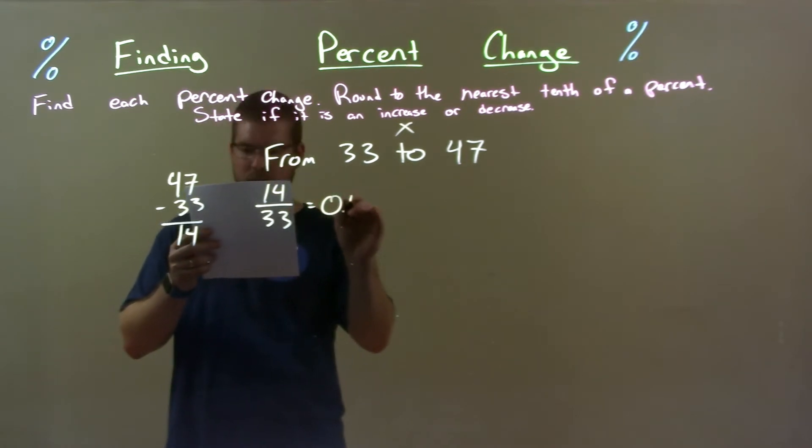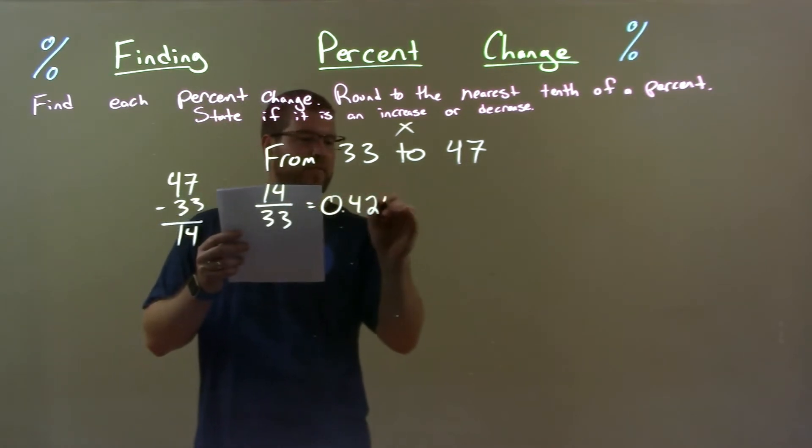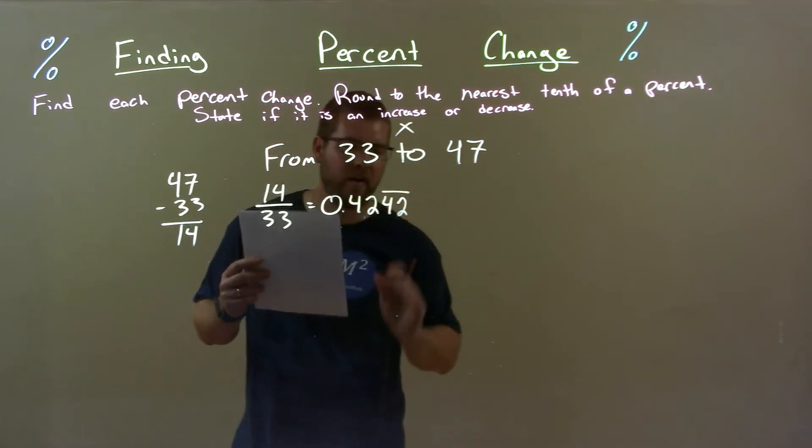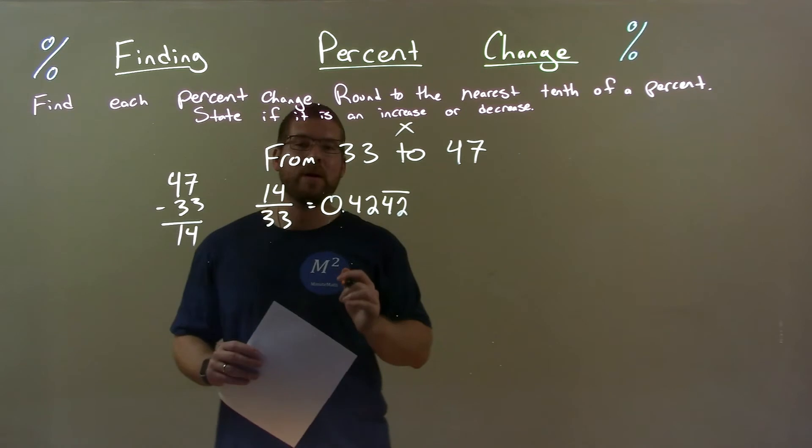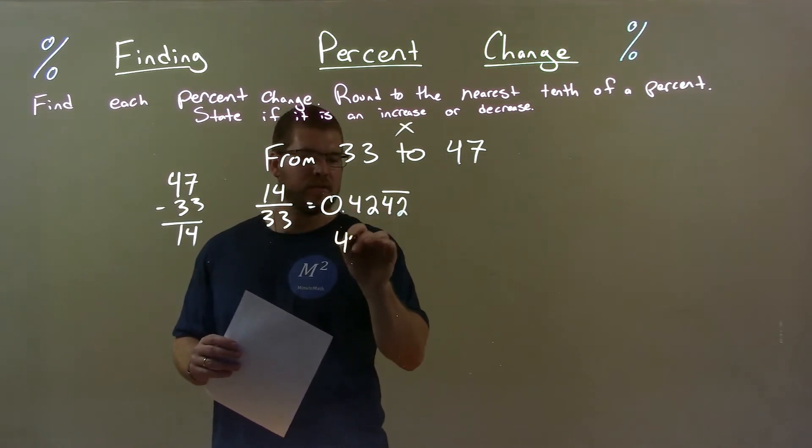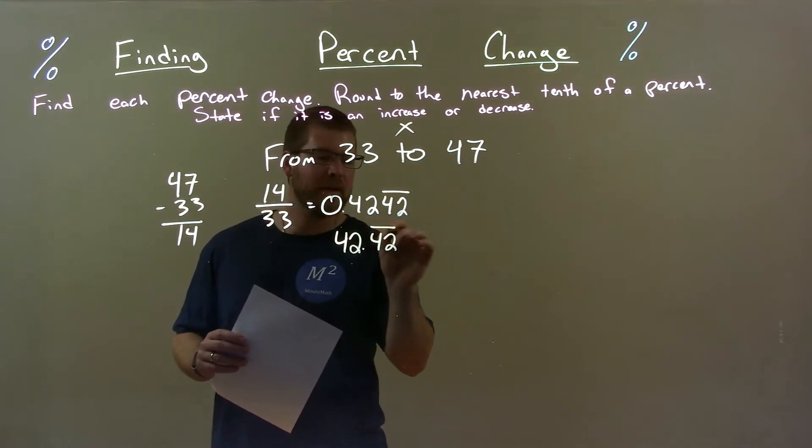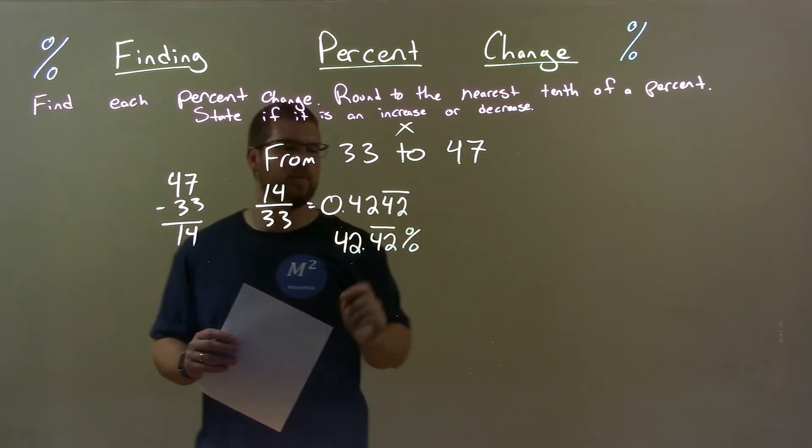Actually 0.42, and that's 42 repeating forever. The 42 part. Convert that up to a percent. It's 42.42 repeating percent. Decimal placement moves over 2.